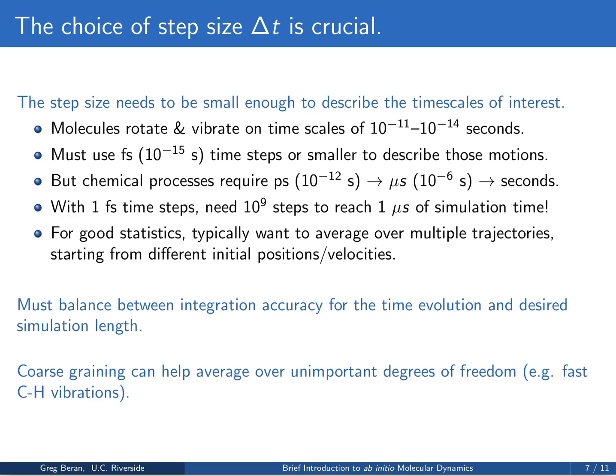But chemical processes typically occur on the order of picoseconds — and it can be as long as microseconds, seconds, or more. So if we're taking one femtosecond time steps and trying to simulate one microsecond of time, we're going to need 10^9 or one billion time steps just to reach that one microsecond of simulation time. And even worse, if we want good statistics, we're usually starting from some initial positions and randomized velocities, and we'll want to average over a bunch of different possible initial conditions. So we may need many billions of time steps to achieve that microsecond with good statistical accuracy.